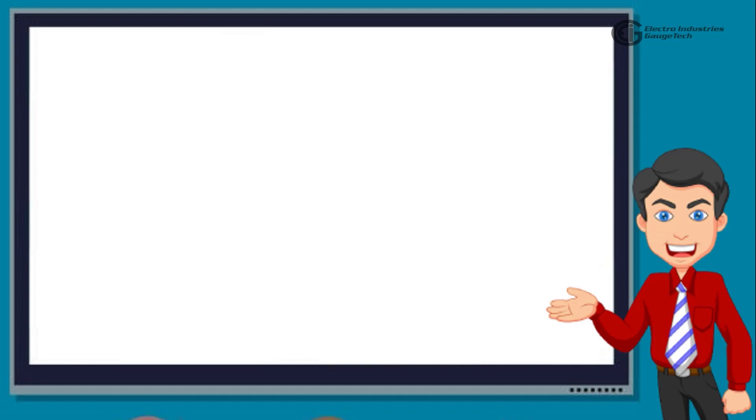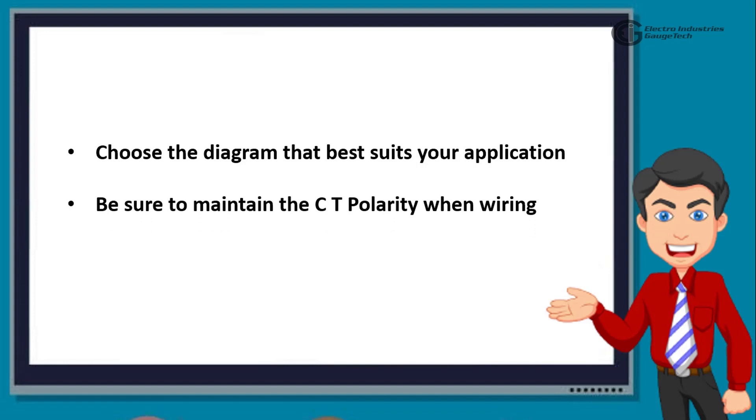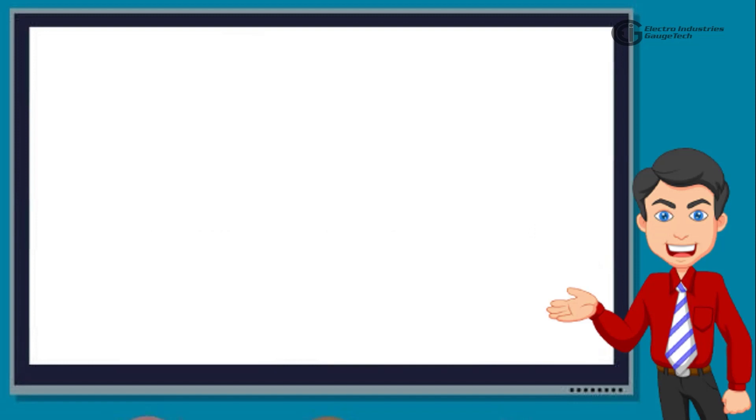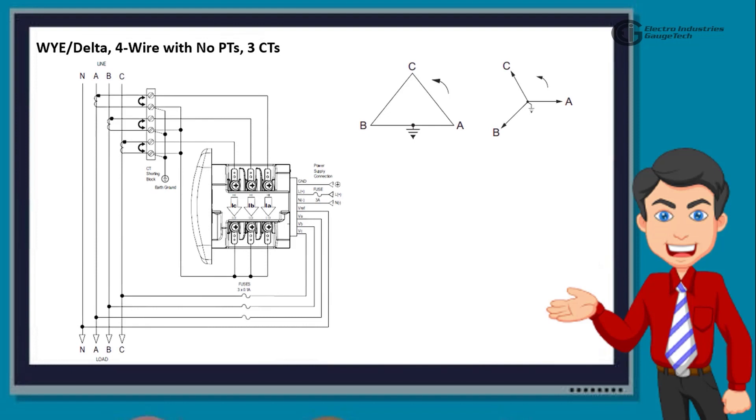The next section we'll cover is the electrical connection diagrams for Shark 250 meters. Choose the diagram that best suits your application. Be sure to maintain the CT polarity when wiring. The first one is Y-Delta, 4 wire with no PTs, 3 CTs. The diagram clearly shows the 3 phase, 4 wire system Y-Delta with direct voltage, and 3 element. When using this wiring, select 3 L Y, that is, 3 element Y from the Shark Meter's front panel display.